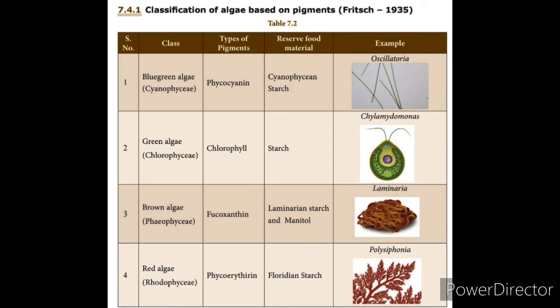Red algae contains phycoerythrin as its pigment, and the reserve food material is floridian starch. The example is Polysiphonia. This concludes the classification of algae based on pigments.